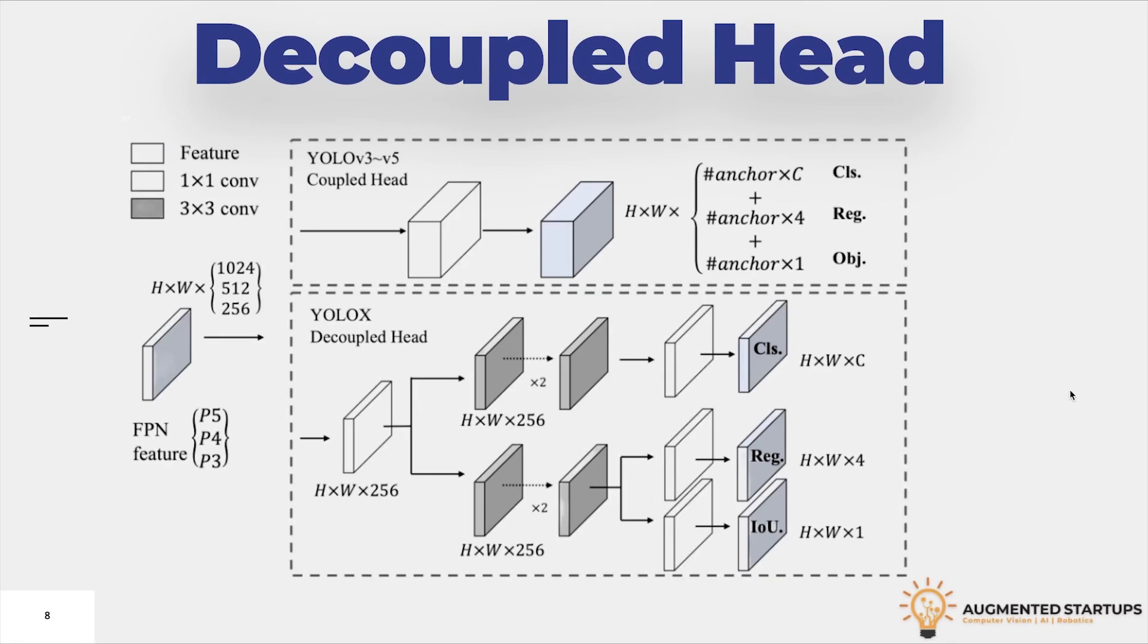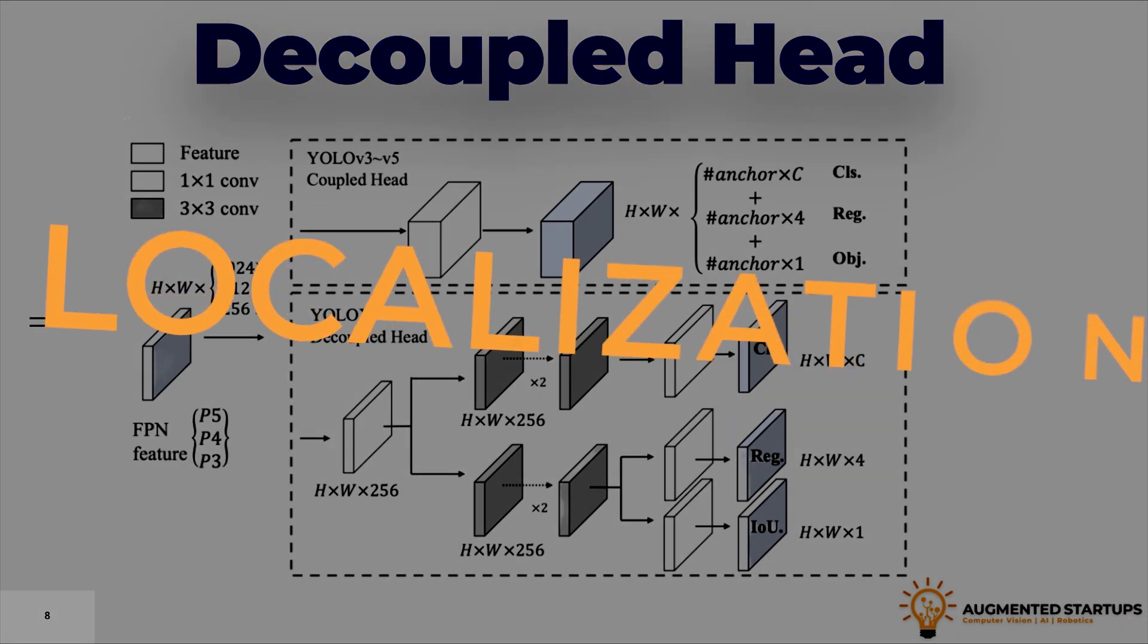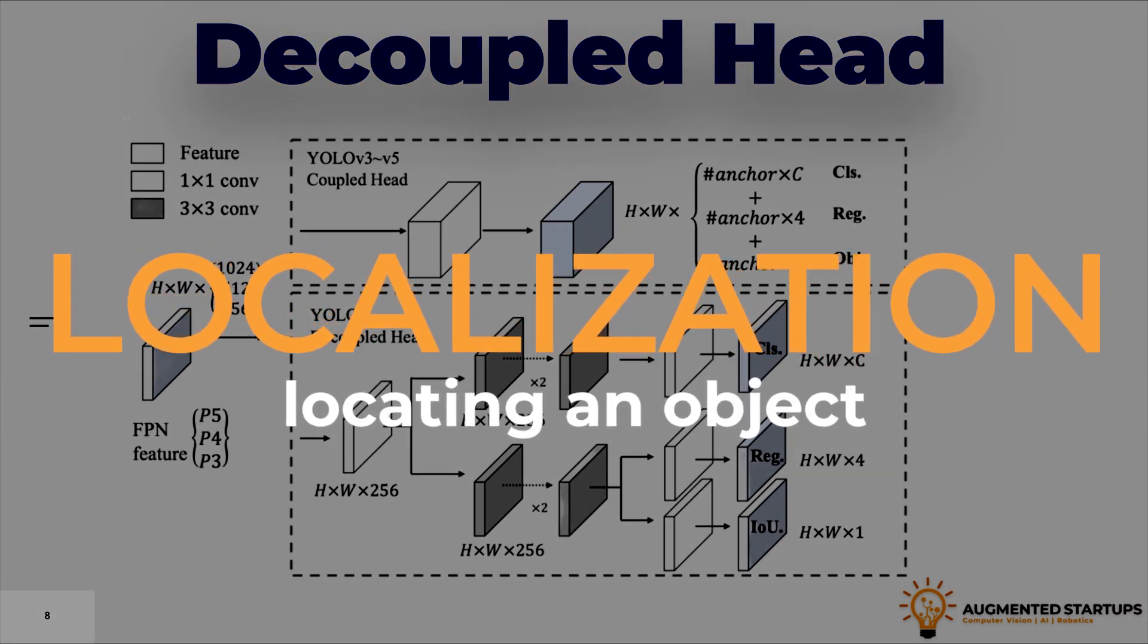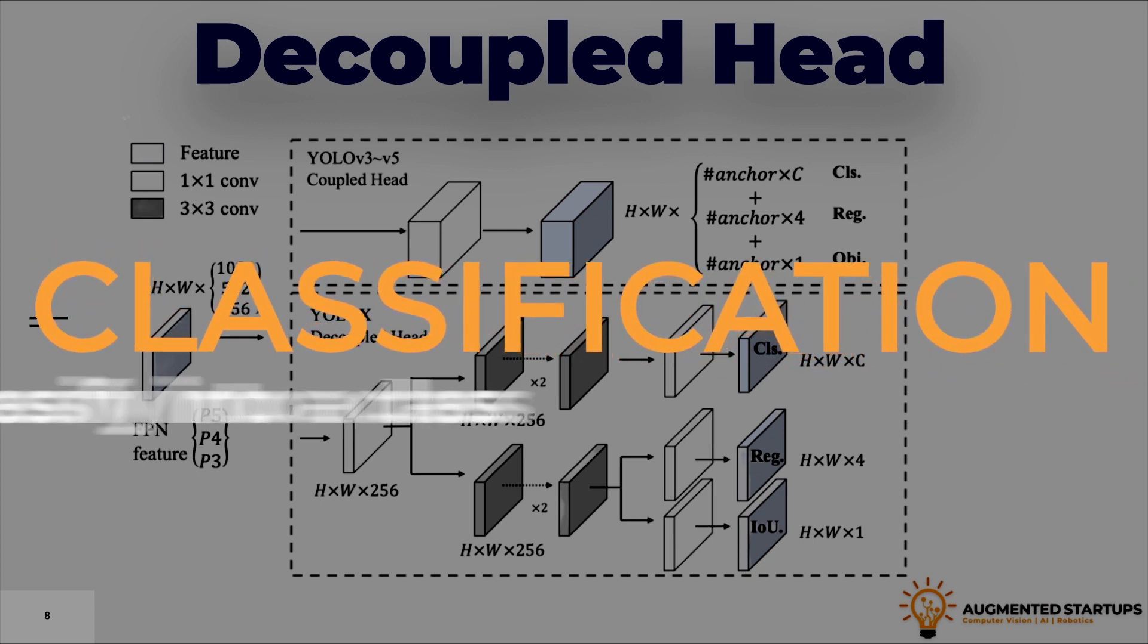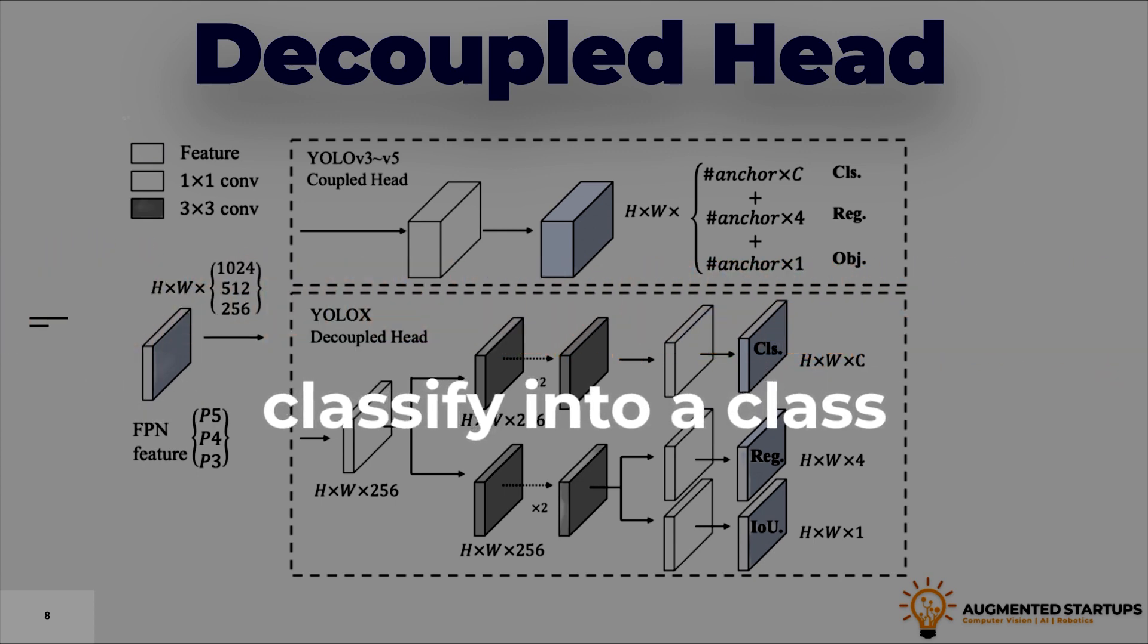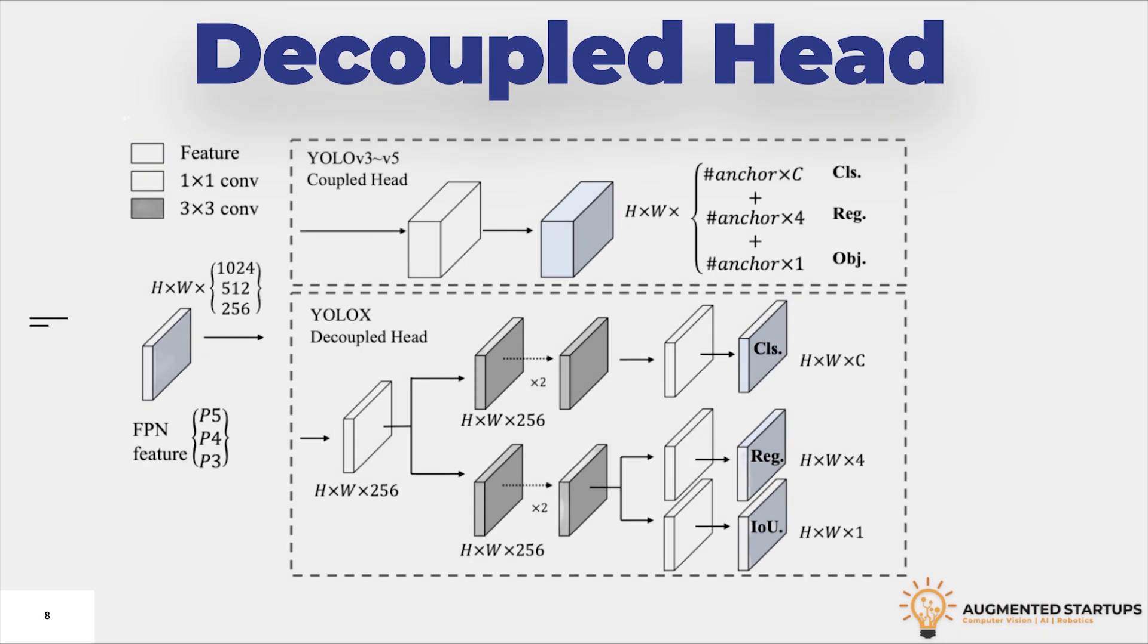Now, let's understand the major key components which are responsible for the improvements of YOLO X. First one is Decoupled head. Object detection has two subtasks. One is localization, that means to locate an object in the image. The second is classification, that means to classify that object into a class. The conflict between classification and regression is a well-known problem.